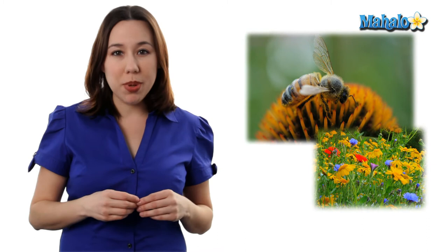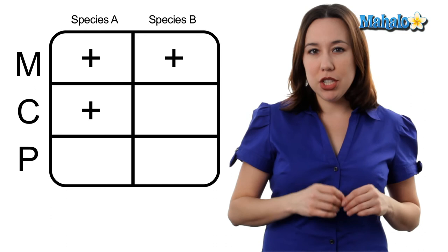Let's move on to commensalism. Commensalism is a positive for species A and a zero for species B. That means no benefit, but no harm either.